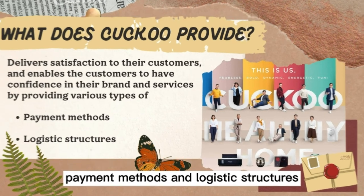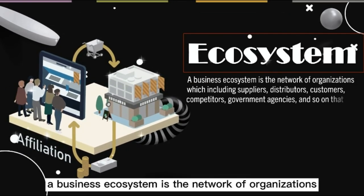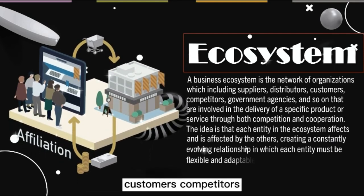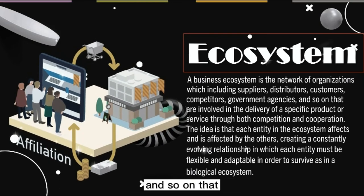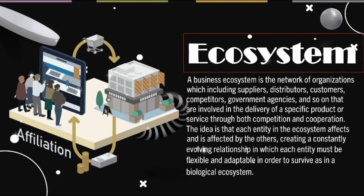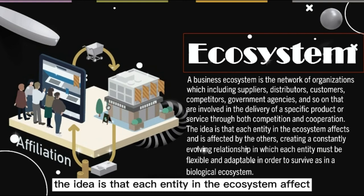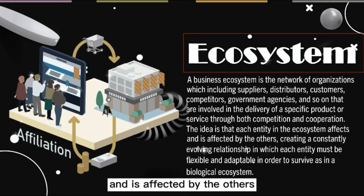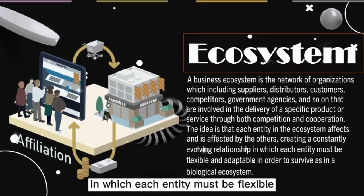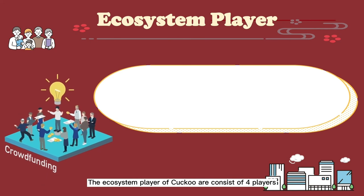A business ecosystem is the network of organizations — including suppliers, distributors, customers, competitors, and government agencies — that are involved in the delivery of a specific product or service through both competition and cooperation. Each entity in the ecosystem affects and is affected by the others, creating a constantly evolving relationship in which each entity must be flexible and adaptable in order to survive. The ecosystem players of Kuku consist of four players: consumers, competitors, marketing services intermediaries, and financial intermediaries.